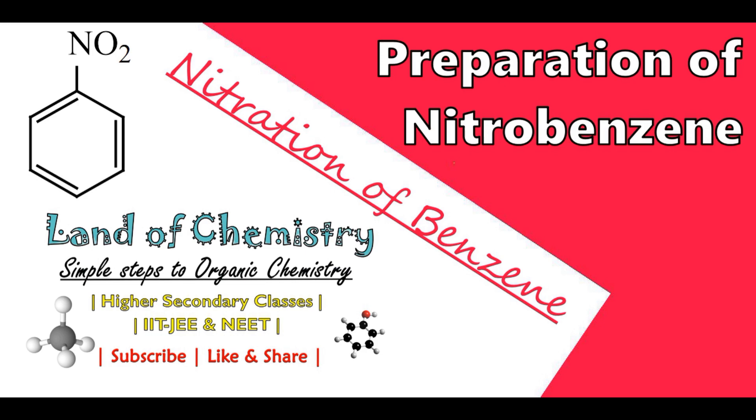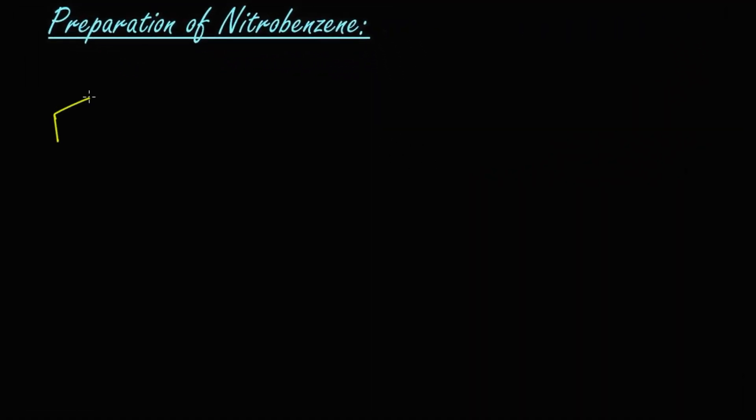Let's learn the reaction. When benzene is heated with concentrated nitric acid, that is HNO3, and concentrated sulfuric acid, that is H2SO4, at the temperature of 330 Kelvin, we get nitrobenzene as the product.